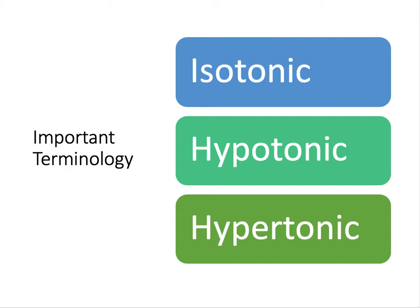For hypotonic solutions, these have a lower solute concentration than our body's plasma. And with hypertonic solutions, these have a higher concentration of solute compared with our body's plasma. These are important terms because we control the movement of fluid between body compartments as a result of their tonicity.